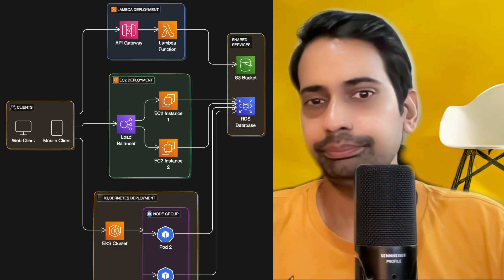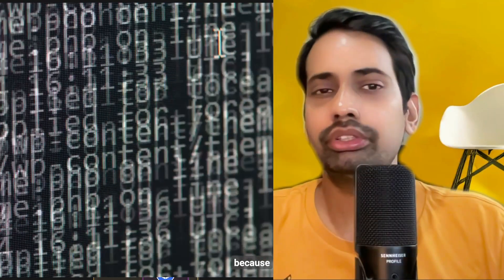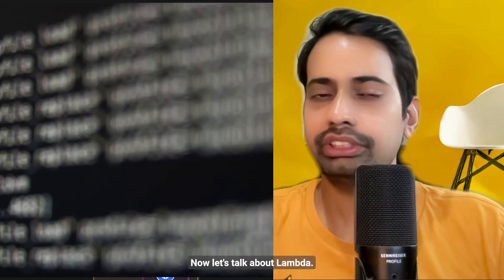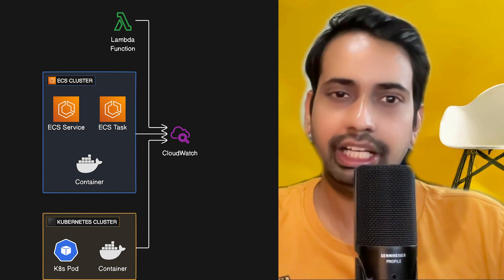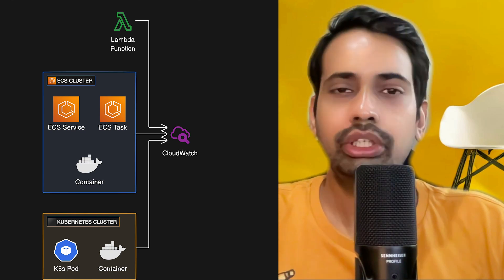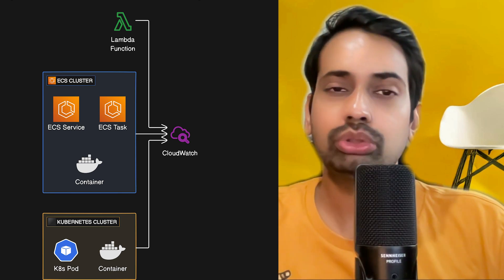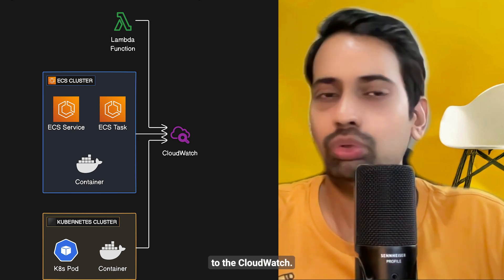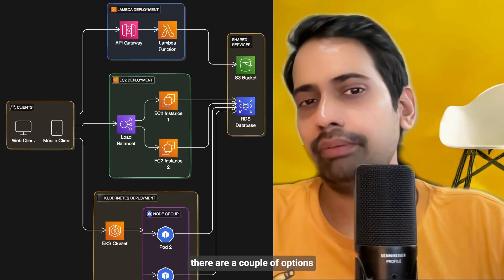Still, one important aspect is logging, because we have to collect all the log traces coming from different microservices. Lambda is a serverless function that executes your request and dies — you cannot store data in memory. You have to write to the console, and AWS provides CloudWatch because it pushes all the logs there. Similarly with EC2 instances, there are a couple of options.